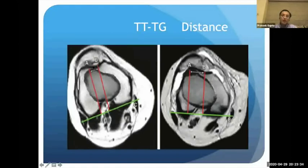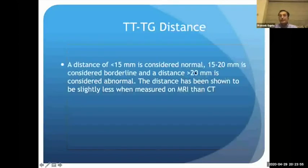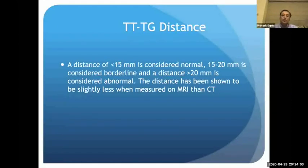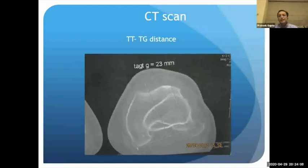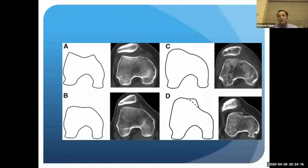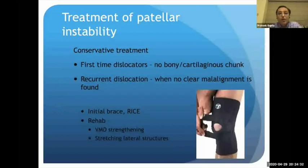The TT-TG distance greater than 15 mm is suggestive of a problem, and greater than 20 mm confirms tibial tubercle malposition. CT scans can also measure this but carry radiation exposure; since MRI provides most of the information, CT is reserved for bilateral problems or when torsional issues need assessment. Otherwise, X-ray and MRI together provide most of the necessary information.